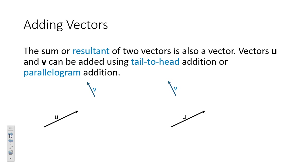When adding vectors, the sum or resultant of two vectors is also a vector. Vectors U and V can be added using tail-to-head addition or parallelogram addition. With tail-to-head, you start with U, then at U's head you place the tail of V. The resultant goes from the tail of U to the head of V — that's vector U + V.